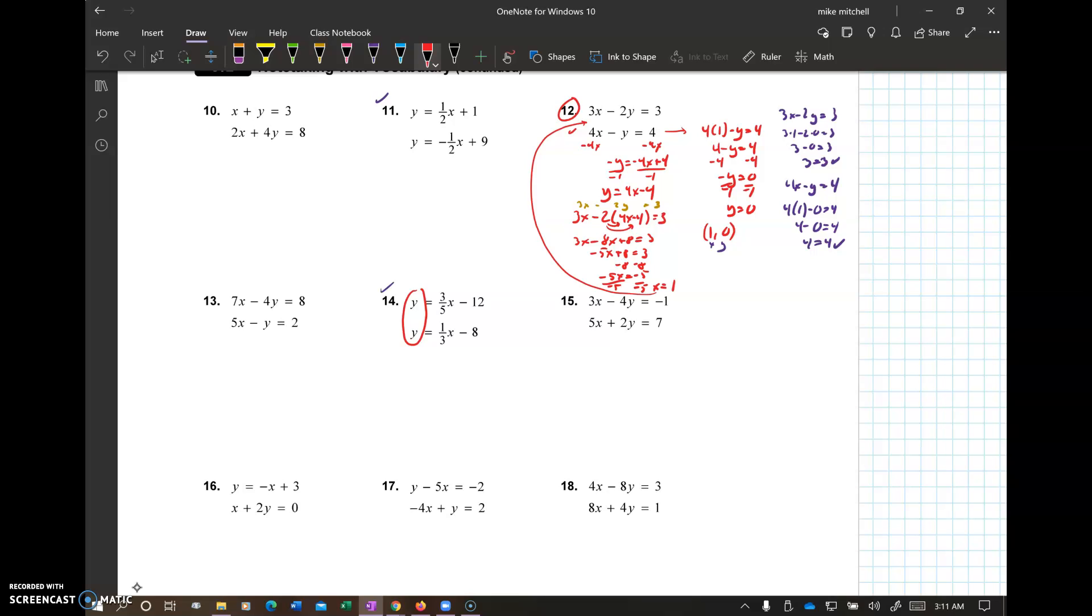Since they're both equal to y, they're equal to each other. So you're going to have, you know, you're basically just taking this and putting it in there. So I'm going to have 1/3 x minus 8 equals 3/5 x minus 12.